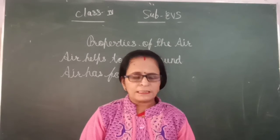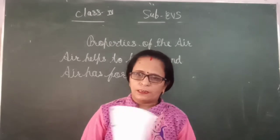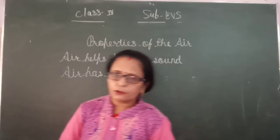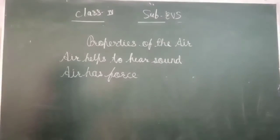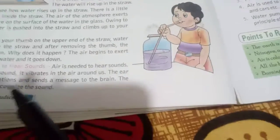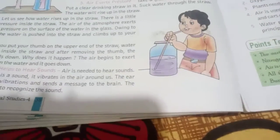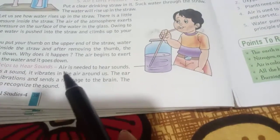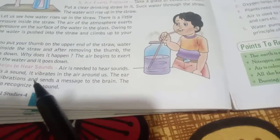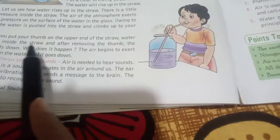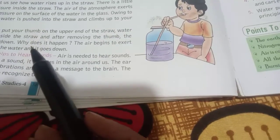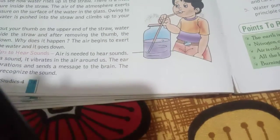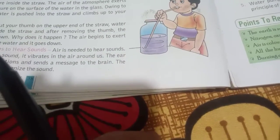So the uses of the air are complete. Now we will read numbers 6 and 7 and the uses of the air. After reading, we will start the exercise. Thank you, children.